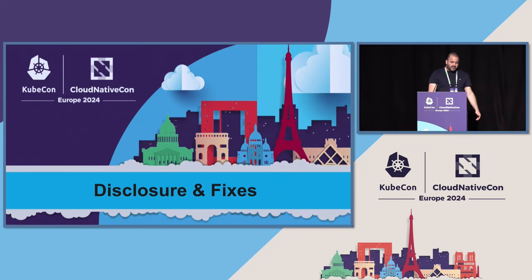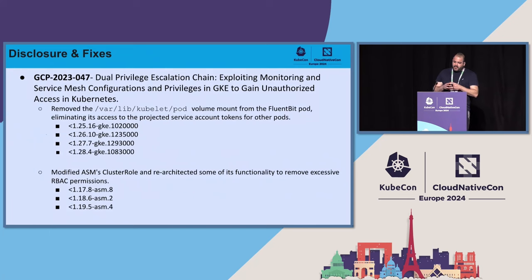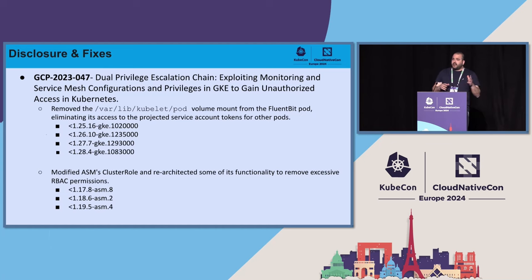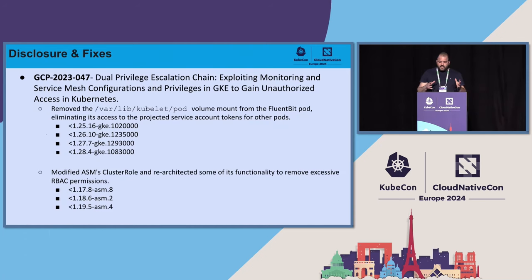Regarding the disclosure and fixes: at the end of 2023, GKE fixed both issues by reducing and hardening Fluent Bit permissions — it no longer mounts the varlib kubelet pods volume — and made architectural changes to Anthos Service Mesh so that pods can no longer be created after the first installation is completed. You can see the fixed version numbers.